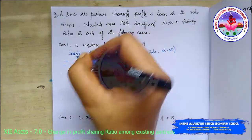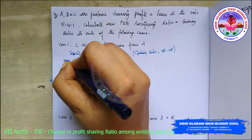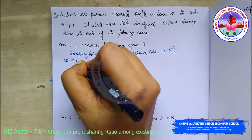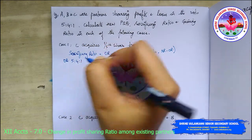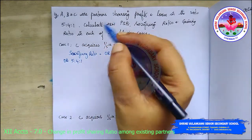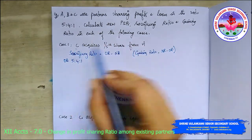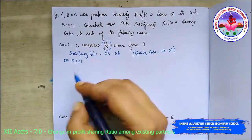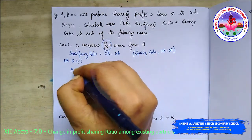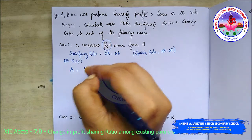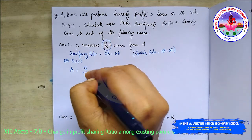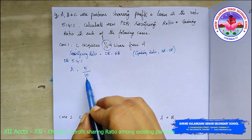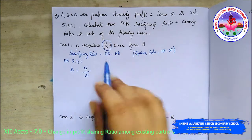In this case, what is the old ratio of A, B, and C? It is 5:4:1. C is acquiring one-fifth share from A. So A's share is 5/10 — the denominator 10 comes from 5+4+1.